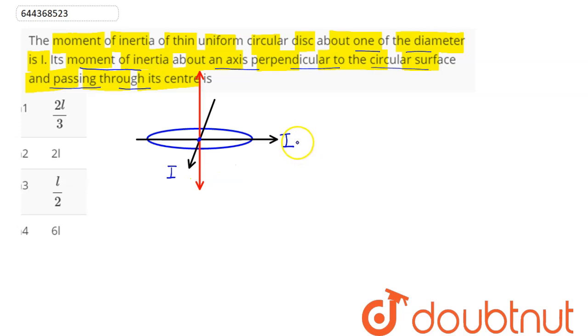Hence we can say these two axes are Ix and here Iz, and here it is asking moment of inertia about this axis Iy which is equal to moment of inertia about center of mass, passing through center and perpendicular to its plane.